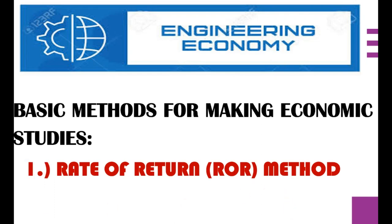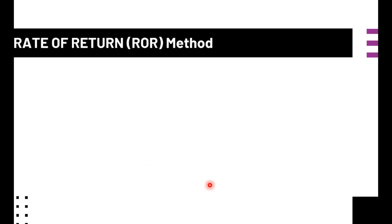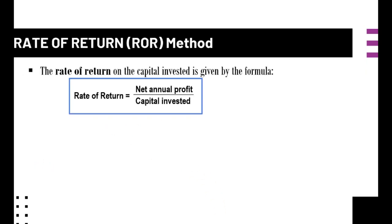Today we are going to discuss the basic methods for making economic studies, and first we will discuss the rate of return, or the ROR method. From here we have a simple definition: the rate of return on the capital invested is given by the formula where ROR is simply equal to the net annual profit over the capital invested.